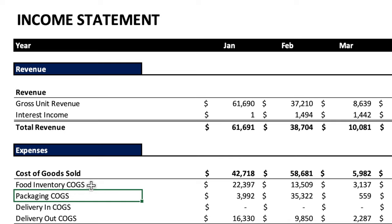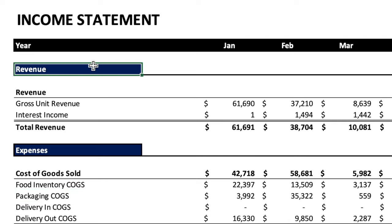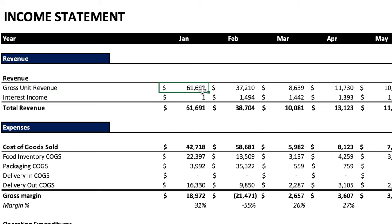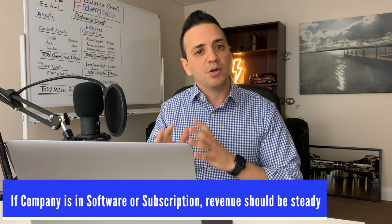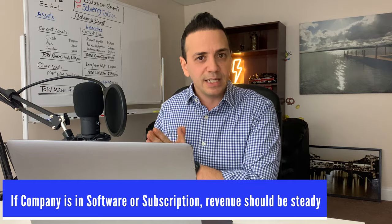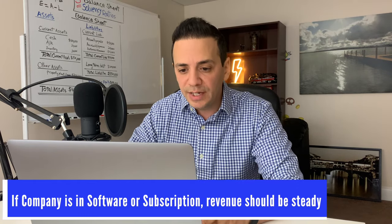Keeping in mind this is a food manufacturing company, let's go through revenues and expenses. The first line in revenue is gross unit revenue — January is $61,000, then $37,000, $8,000, $11,000. It fluctuates a lot throughout the year, which would normally be a sign of an accounting error. But since it's a food manufacturer relying on purchase orders from distributors, this fluctuation makes sense. If it were a subscription or software company, revenue should be steadier.